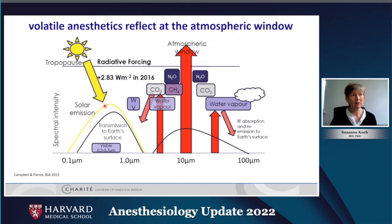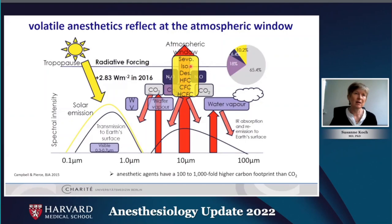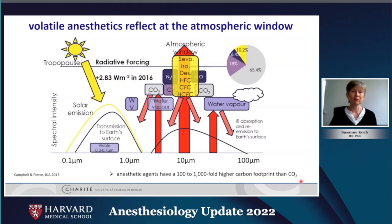Here you see the solar radiation coming in and the infrared radiation going out. Normal greenhouse gases like carbon dioxide, methane and nitrous oxide leave a window open at around 10 micrometers. And just within this window, the anesthetic gases as well as other hydrofluorocarbon substances reflect infrared radiation. That is why they have a 100 to 1,000 fold higher carbon footprint compared to carbon dioxide, which has a GWP of one as the reference gas.